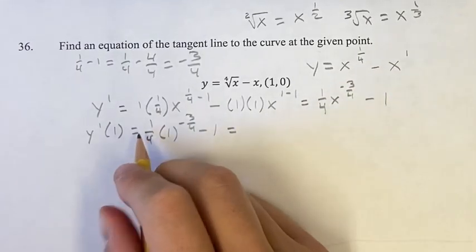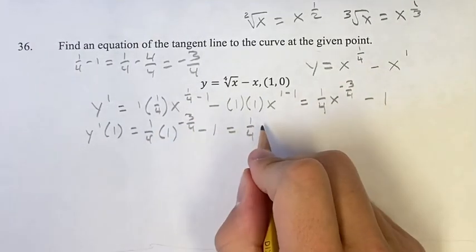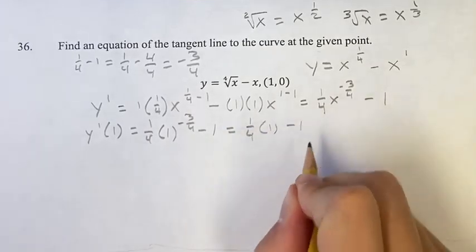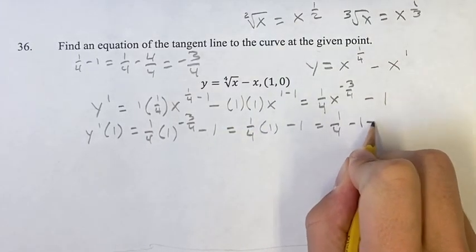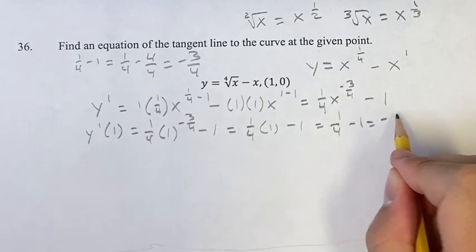Simplifying this, you get one-fourth. One to any power is just one. Minus one is one-fourth minus one, which we already found is negative three-fourths.